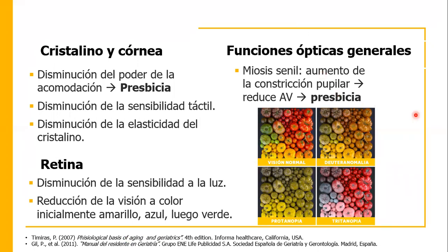En cuanto a las funciones ópticas generales, va a haber miosis senil, en la cual hay un aumento de la constricción pupilar. Esto le va a reducir al paciente la capacidad de acomodar ante situaciones de iluminación diferentes, lo que le va a traer una baja visual y con ello se instaura la presbicia.